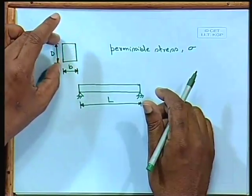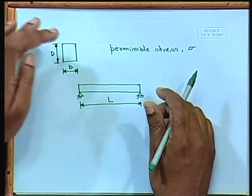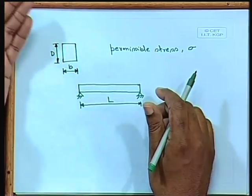Whatever section we provide, it must resist the bending coming from external loads as well as the self-weight. Considering that, if we provide a simple rectangular homogeneous section — maybe made of steel, aluminum, or wood — and apply a concentrated load P, then the bending moment M equals PL/4. The bending moment diagram shows this maximum value at midspan.